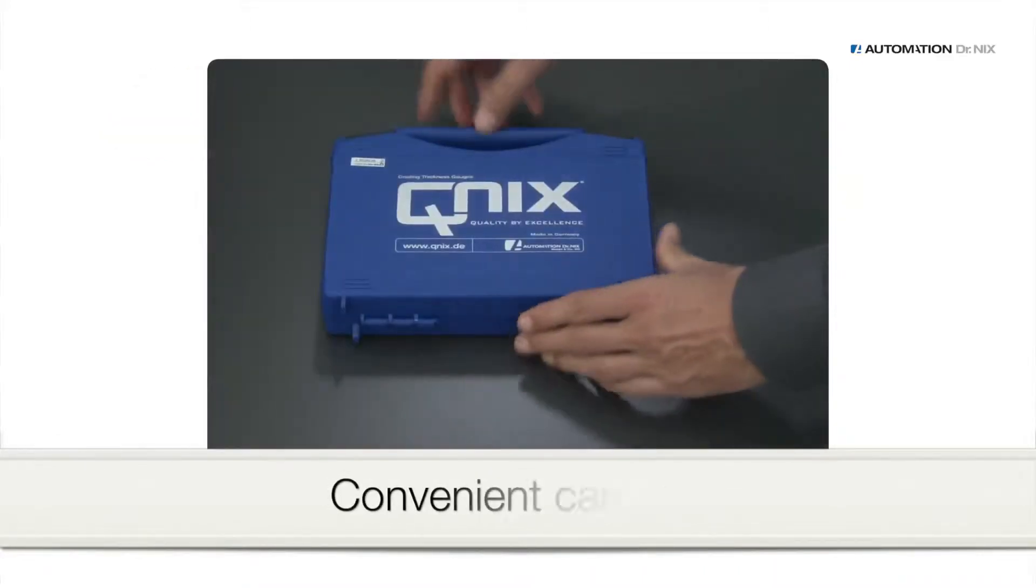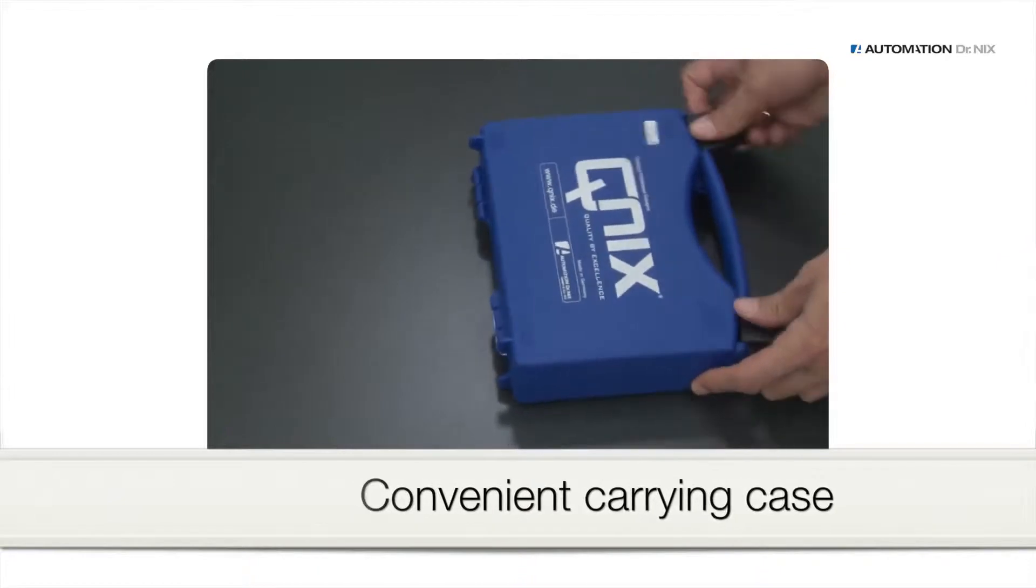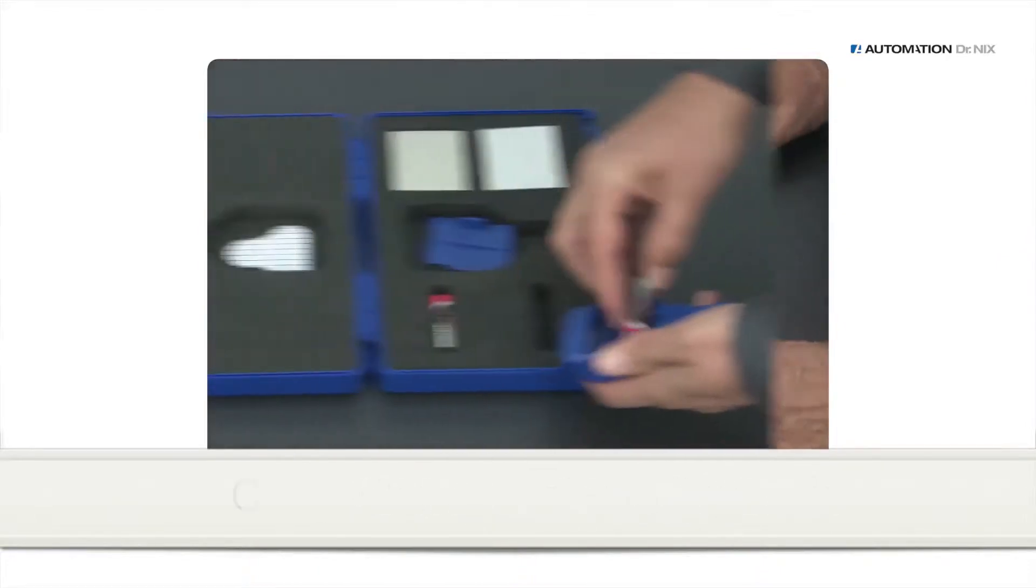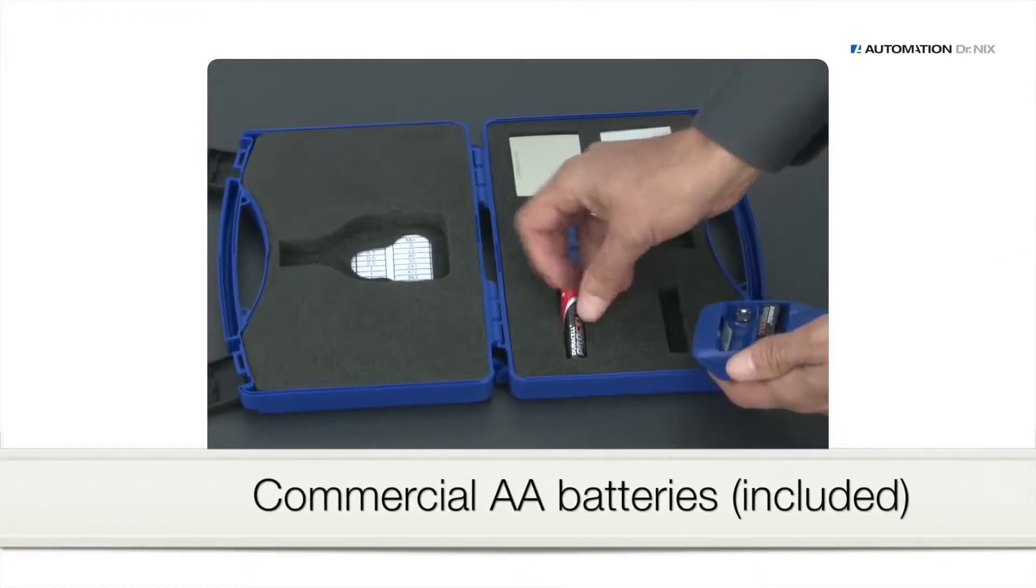You receive the QNIX 4500 in a convenient carrying case. You simply insert two commercial AA batteries into the gauge.